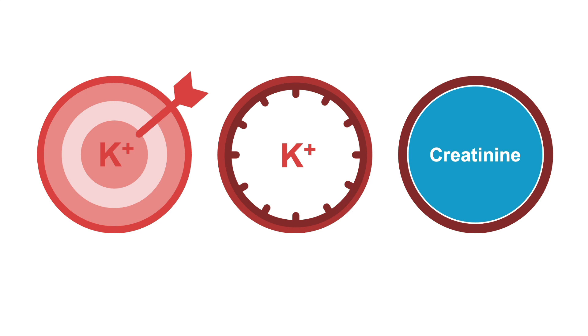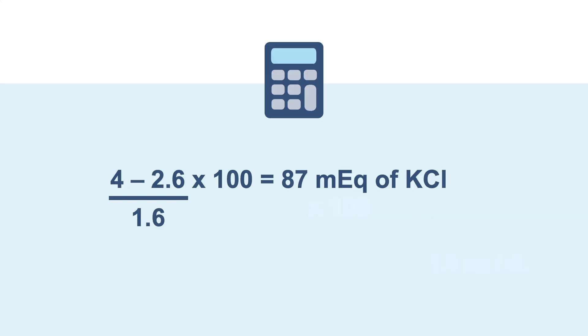In another example, the patient's potassium is 2.6 milliequivalents per liter. Their goal is 4 milliequivalents per liter. Their creatinine is 1.6 milligrams per deciliter. Now let's do the math again. 4 minus 2.6 divided by 1.6 times 100. This gives us around 87 milliequivalents of potassium chloride.